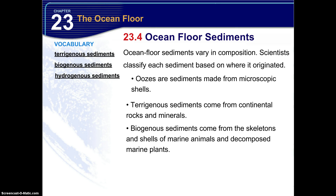This process is similar to the one by which calcareous oozes lithify to form chalk. Both chert and chalk are often found with marine limestone deposits. Chert was an important raw material for prehistoric humans — its fine texture allowed it to be chipped to form sharp tools and weapons.